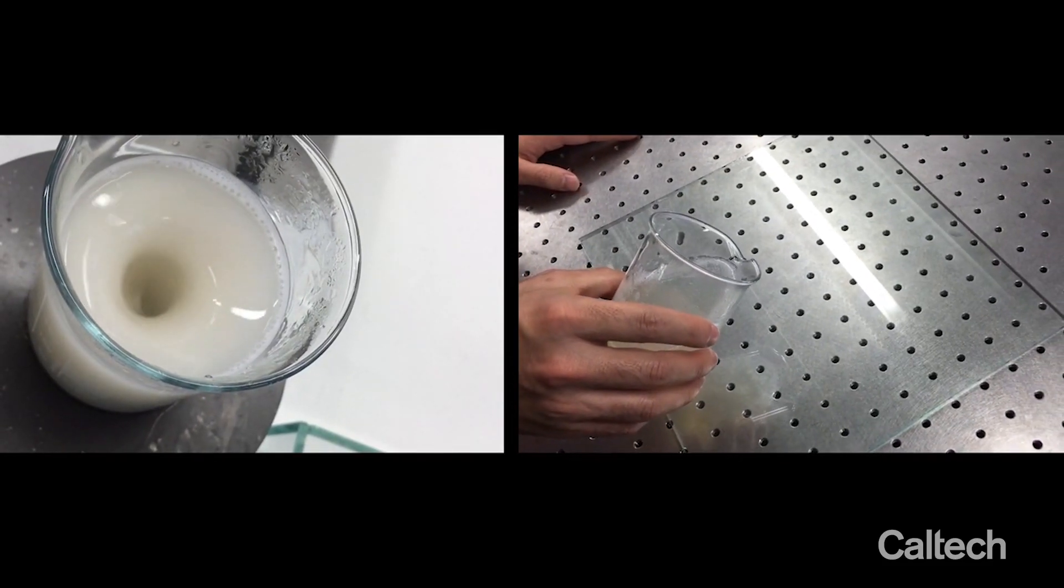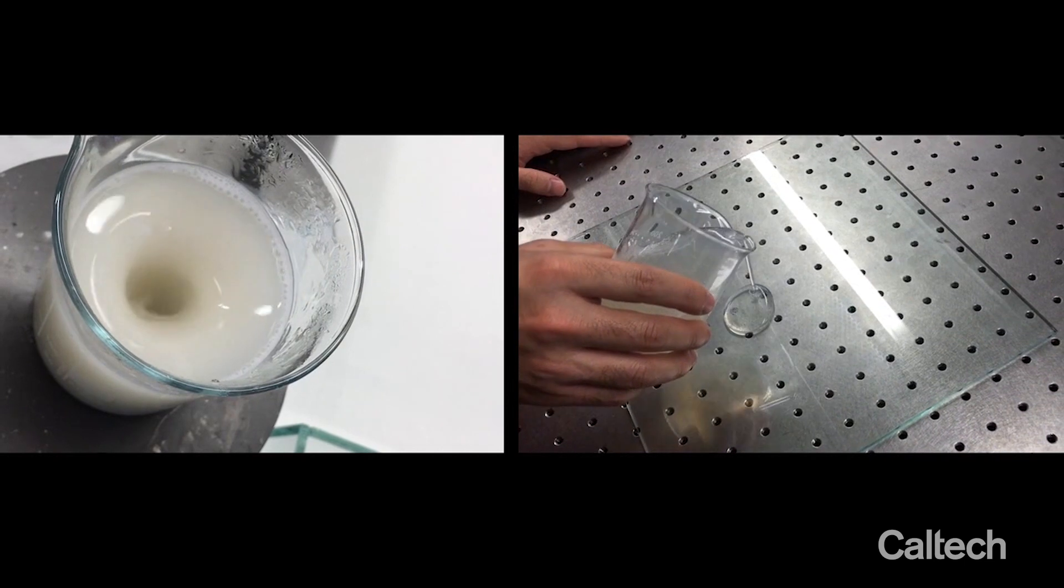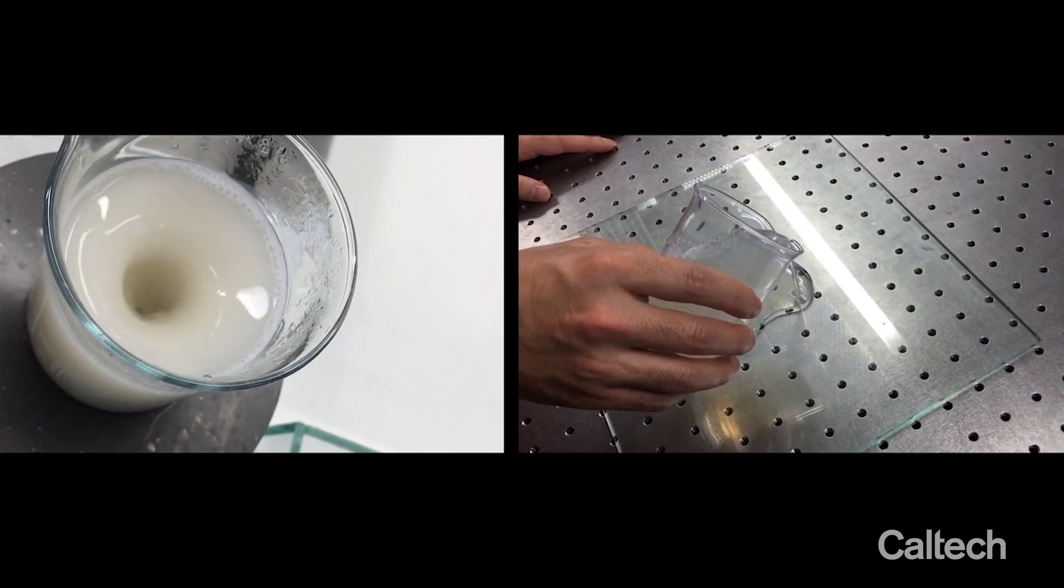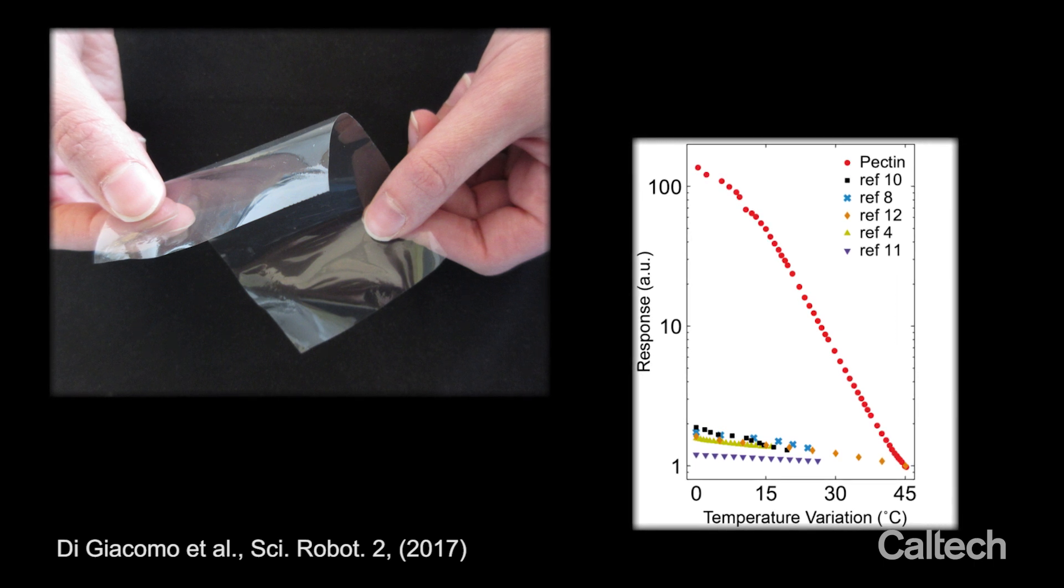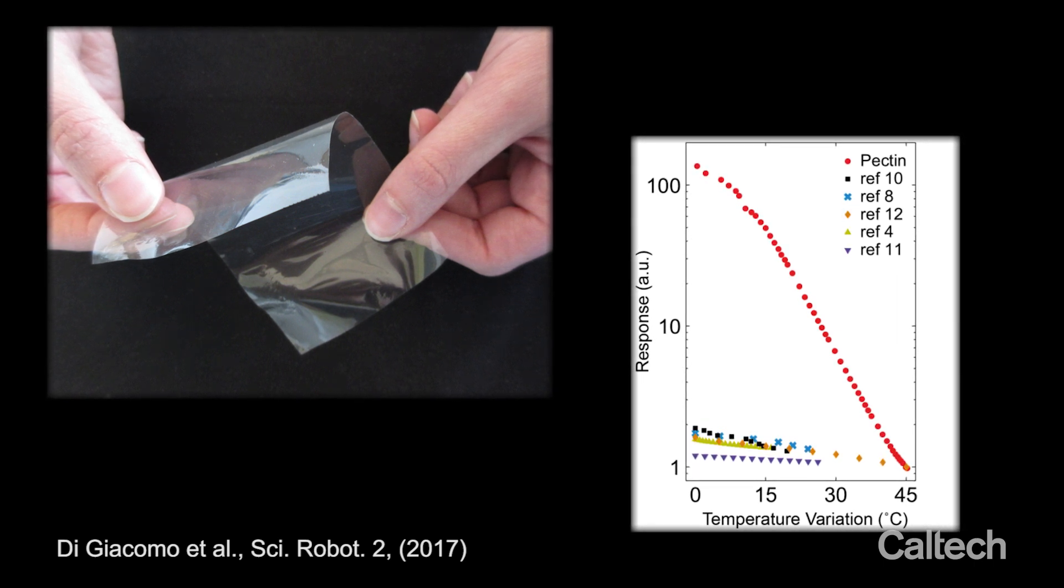When we fabricated these pectin thin films by creating a hydrogel of pectin and then drying out the hydrogel, we realized that the properties of the responsivity to temperature changes were record-breaking.